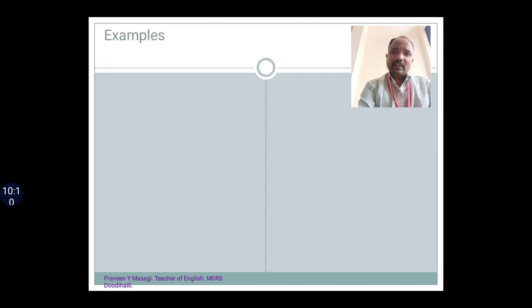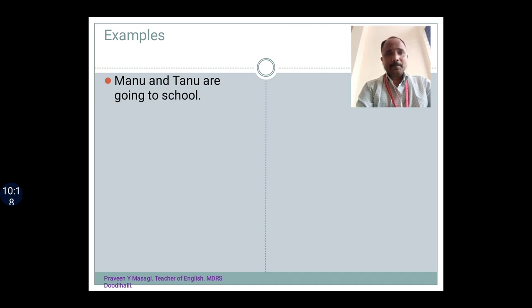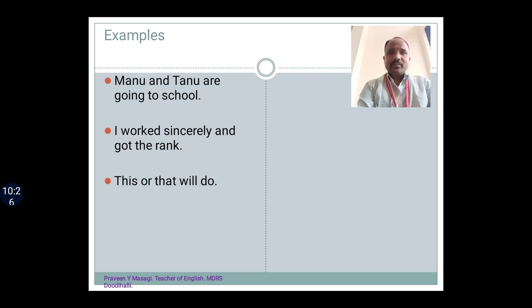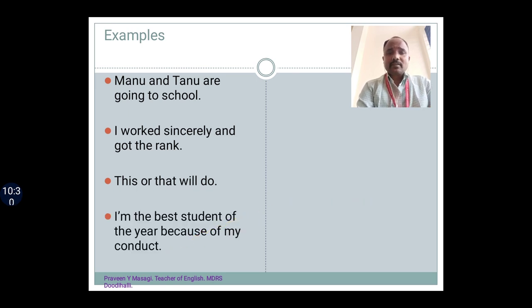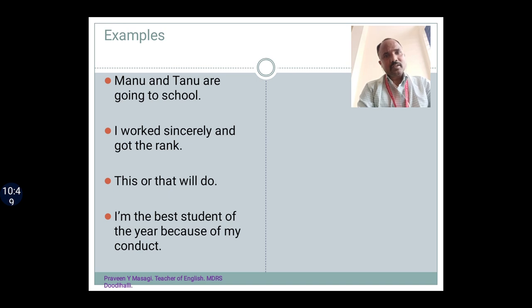Now let's look at the usage of conjunctions — how we can use conjunctions in a sentence and how they do the duty of joining and connecting. Manu and Thanu are going to school. The next one is: I worked sincerely and got the rank. Third: This or that will do. The next: I am the best student of the year because of my conduct. Note that 'conduct' as a noun means behavior; if pronounced 'conduct', it becomes a verb. Now take a few seconds and try to identify the conjunctions in the sentences using the definition.